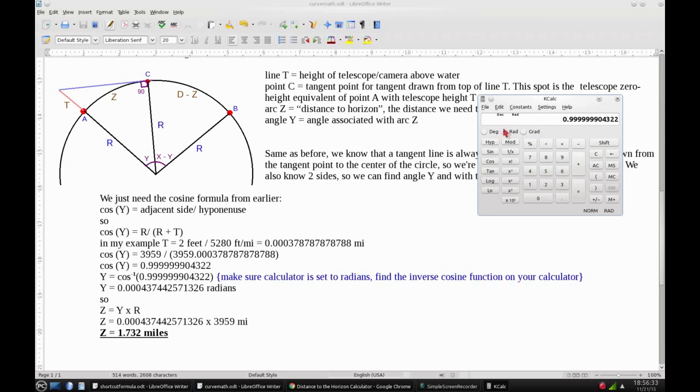So now I need to take the inverse cosine of this, and again, make sure your calculator is set to radians. My calculator has a shift button that changes these functions to the inverses. So now I'm going to click on the inverse cosine button, and I get this number, and that's angle Y in radians.